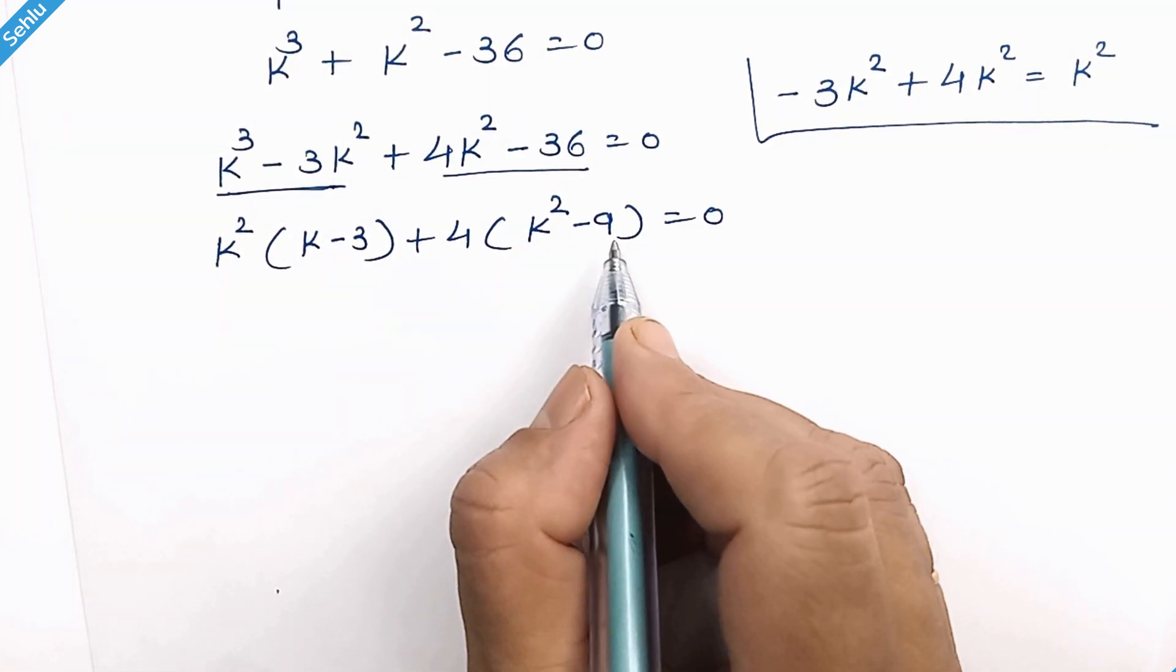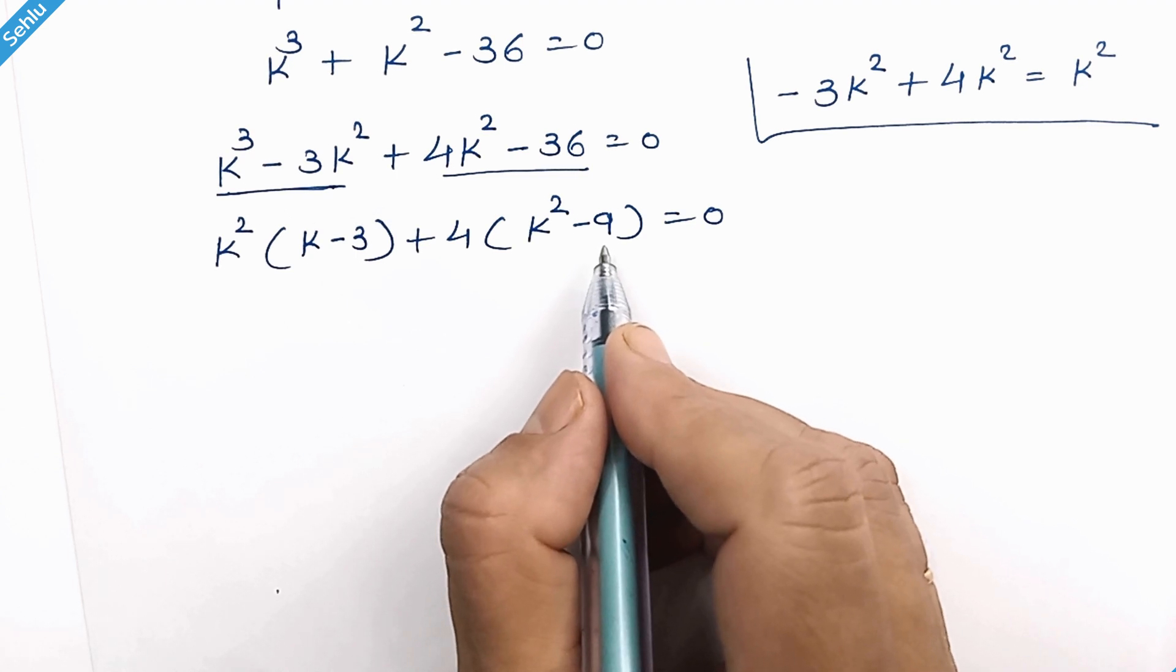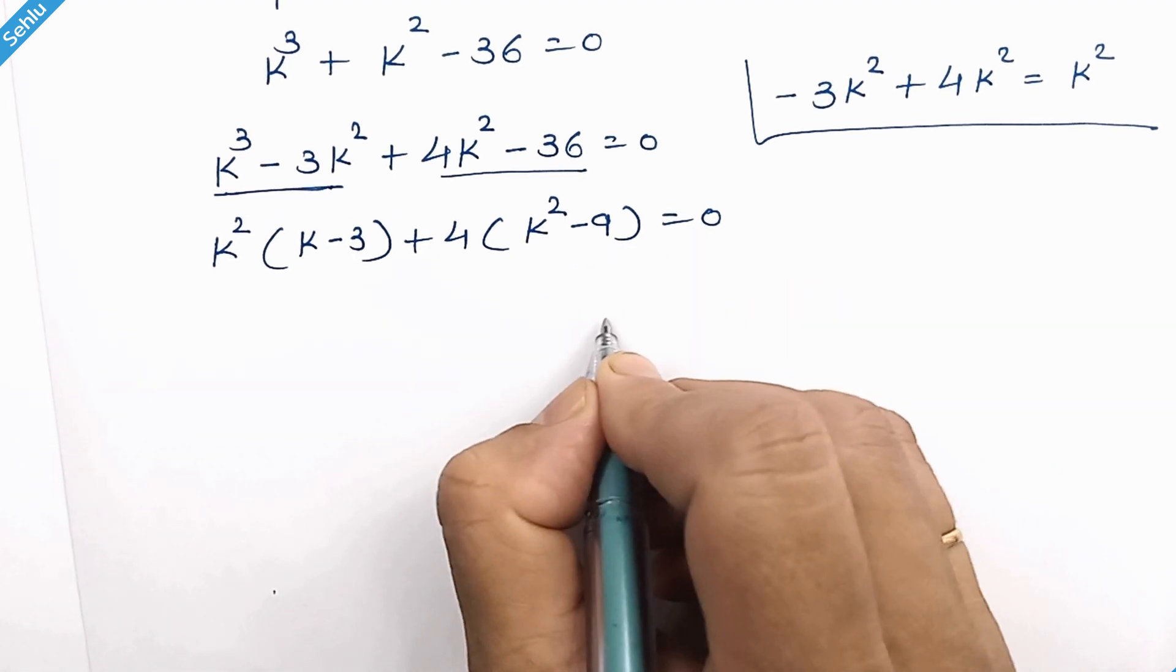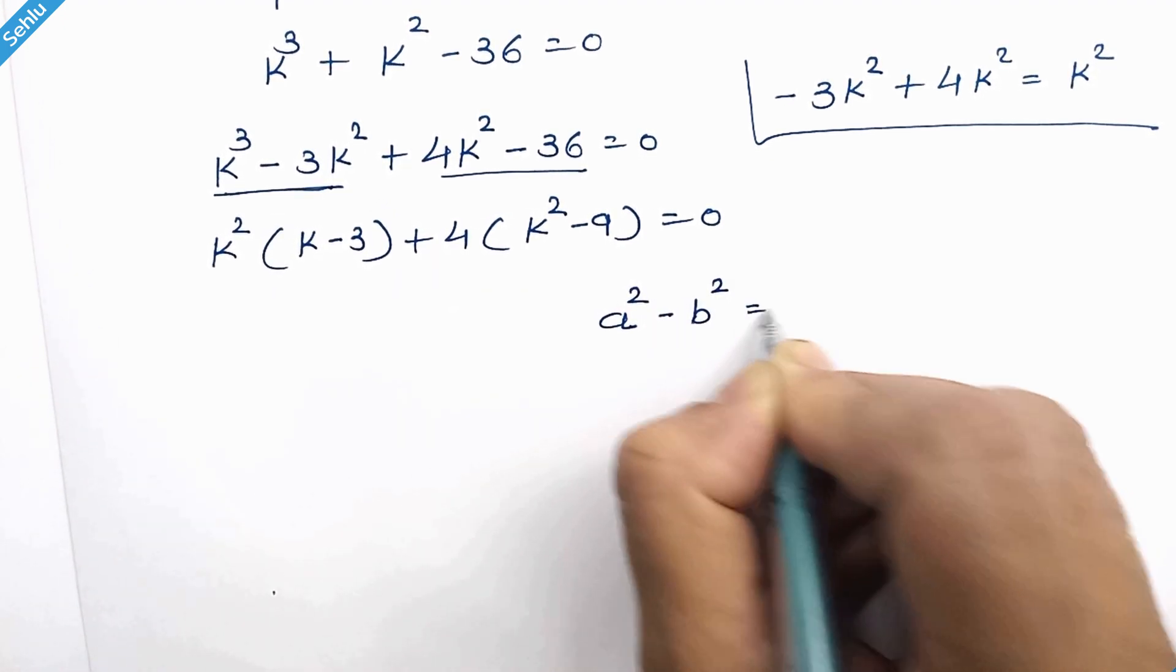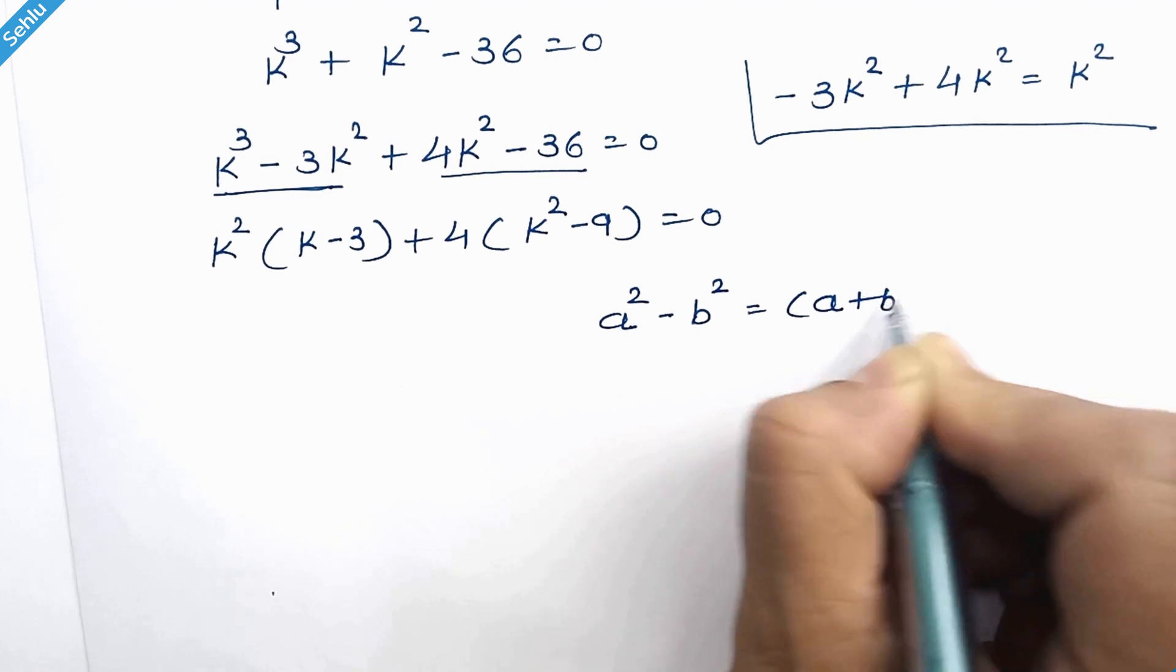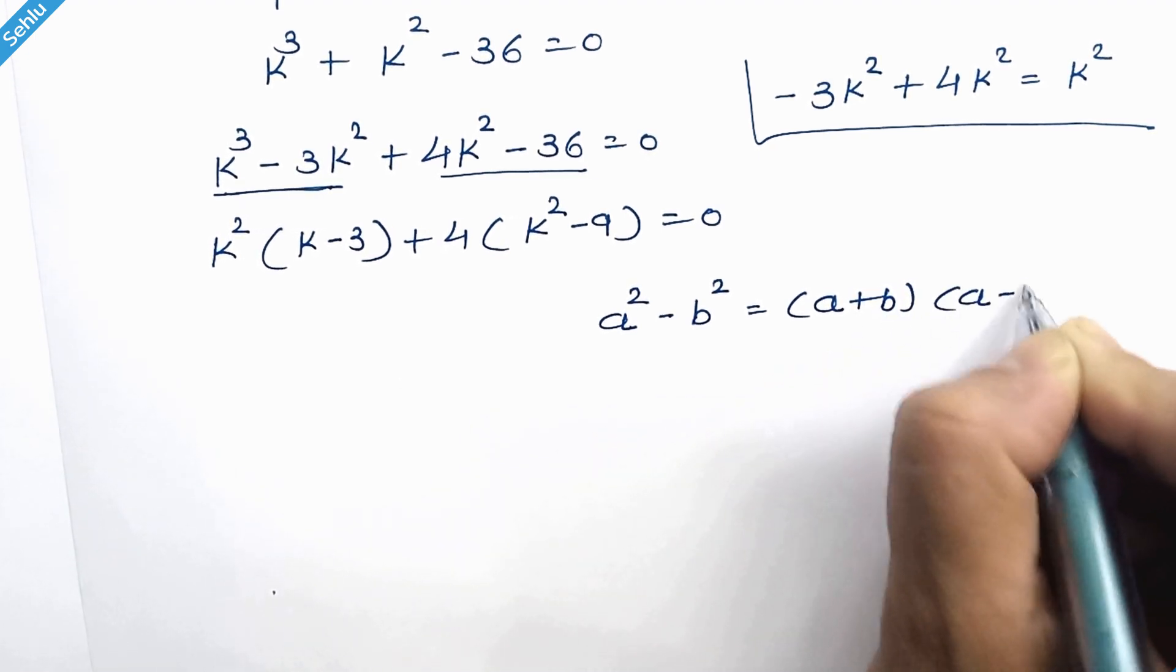9 is 3 square. So we can apply an identity here which is a square minus b square. Then it can be a plus b times a minus b.